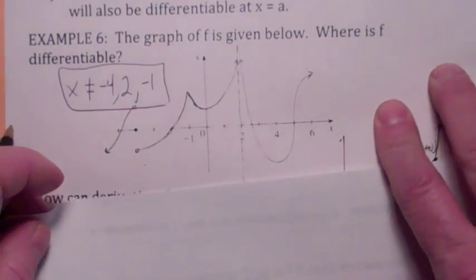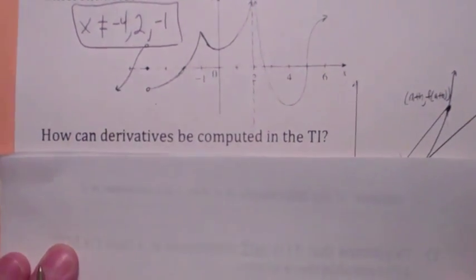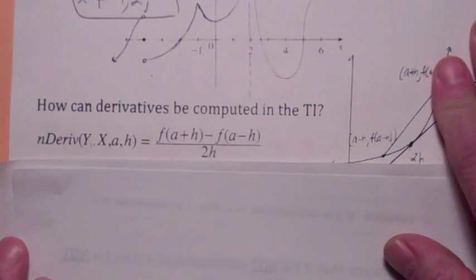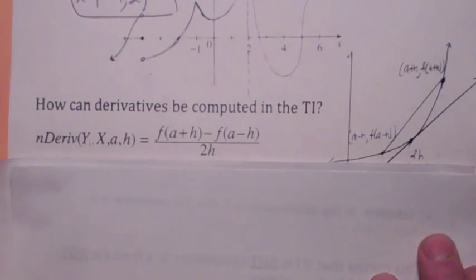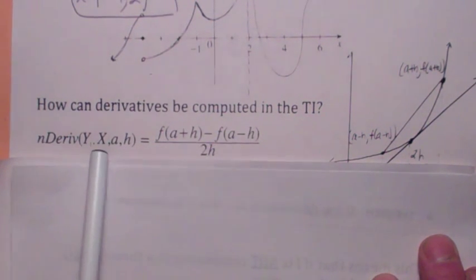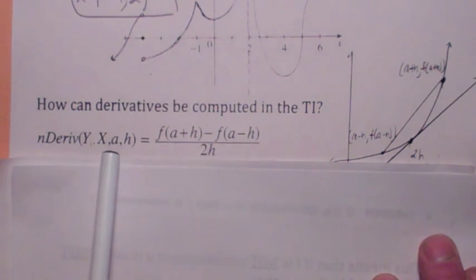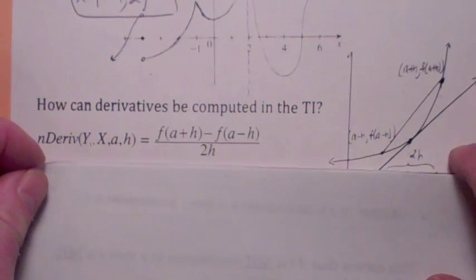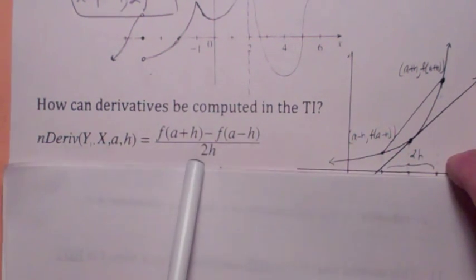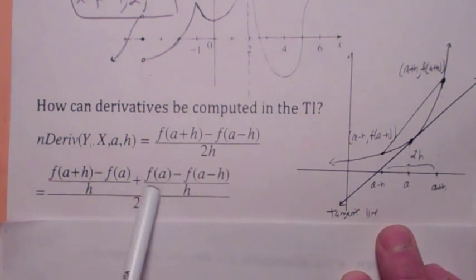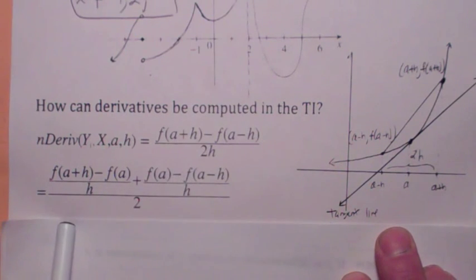How does your calculator compute the derivative? Your calculator uses nDeriv. The syntax is nDeriv of y1 — the derivative of the function y1 with respect to x, at x equal a, with the change in x being h, the same h that we use with our regular difference quotient. If you look at it this way, these two things are equivalent. This is the average of the slopes of the secant before and after x equal a, which we talked about in section 2.1.